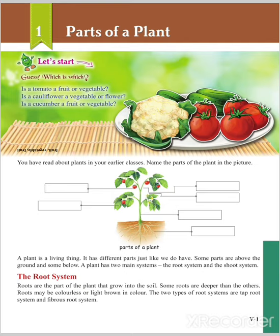Some parts of the plant grow on the ground and some parts grow below the ground. The plant has two main systems: one is the root system and the other is the shoot system. The root system is the part which grows under the soil.